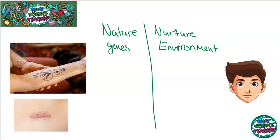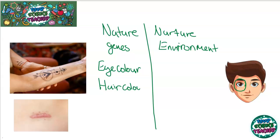Let's look at some examples of characteristics controlled by our genes. Look at this face over here — his eye colour, the fact that he has brown eyes, that is controlled by his genes. If he was to wear contact lenses to change it, obviously that would be his environment because he would be making a conscious choice. Also, his hair colour is controlled by his genes, and look at his skin colour — that is also another characteristic controlled by his genes.